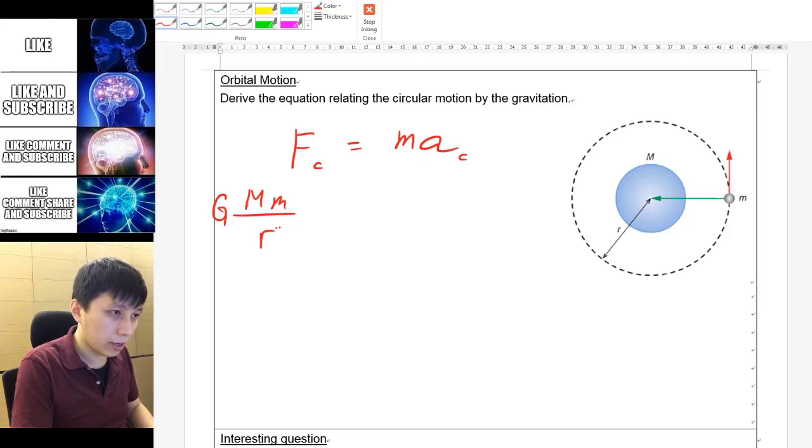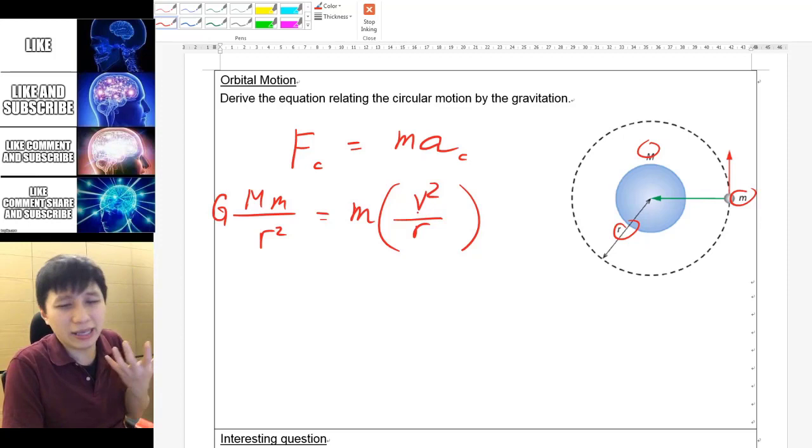And then we have the small m. And for centripetal acceleration, you may use v squared over r. But then we want to link it to Kepler's law, right? And so we don't want to use v because there's no T in it. Instead, let's look at our data booklet, and the one that we want to use probably is 4 pi squared r over T squared. So 4 pi squared r over T squared, right? Yeah, that's the one.